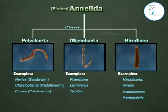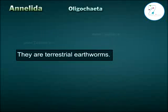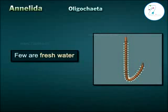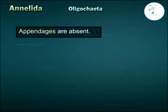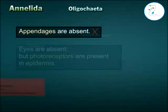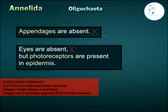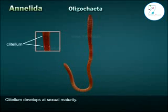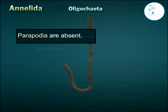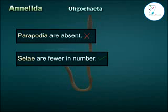Class 2 - Oligochaeta: they are terrestrial earthworms; few are freshwater and marine water species. Appendages are absent; eyes are absent, but photoreceptors are present in the epidermis. Clitellum develops at sexual maturity. Parapodia are absent. Setae are fewer in number.